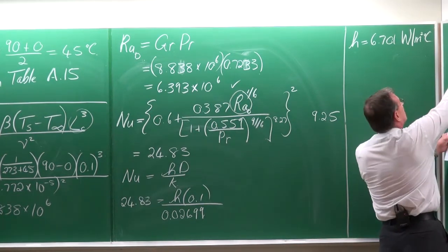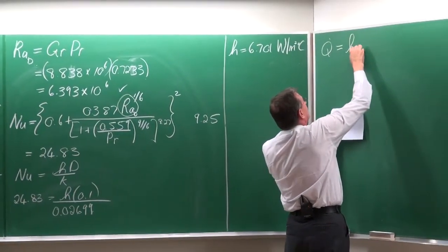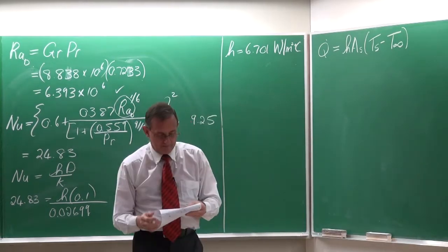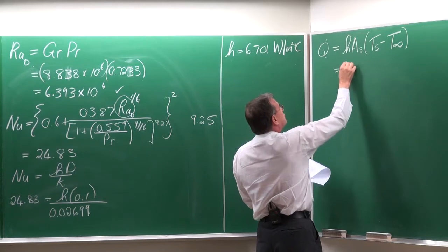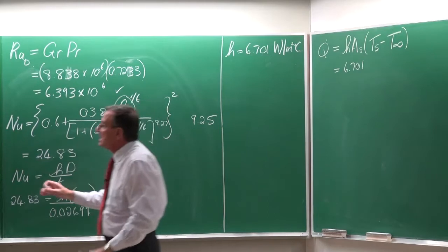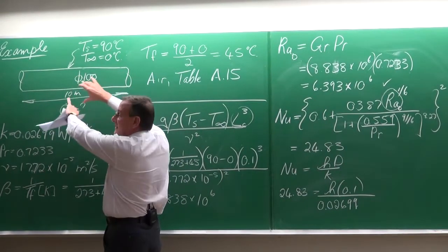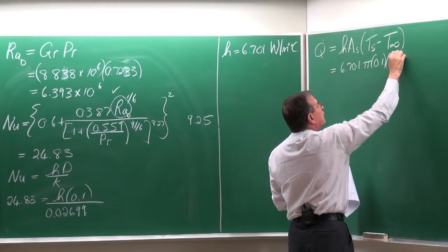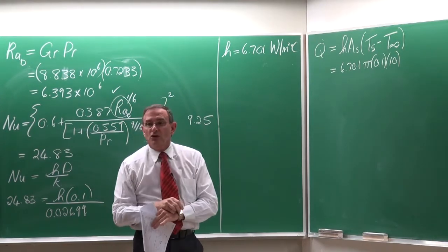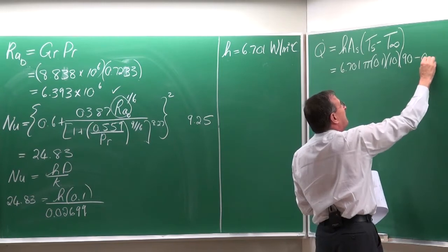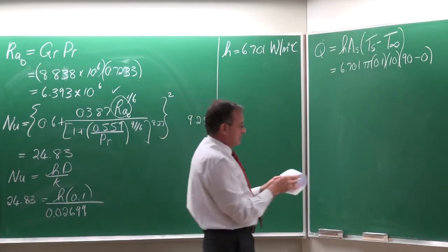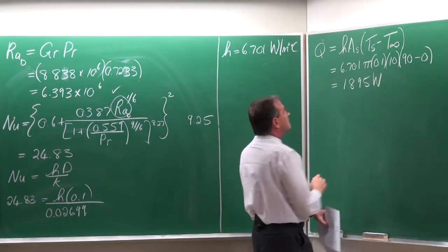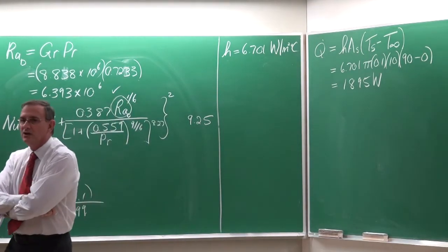Now that we've got the heat transfer coefficient, let's calculate the heat transfer rate: Q = h × A × (Ts − T∞). The surface area is the outside surface area of the pipe: A = π × D × L = π × 0.1 × 10. With h = 6.701 and ΔT = 90 − 0, the heat transfer rate is approximately 1,895 watts — about 1.9 kilowatts of heat loss.